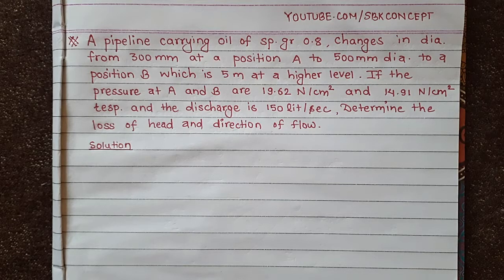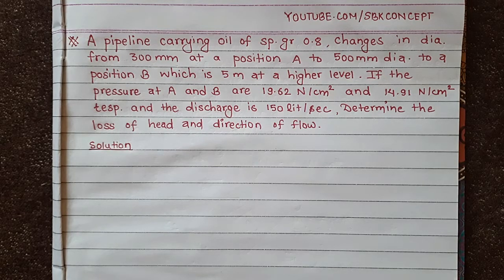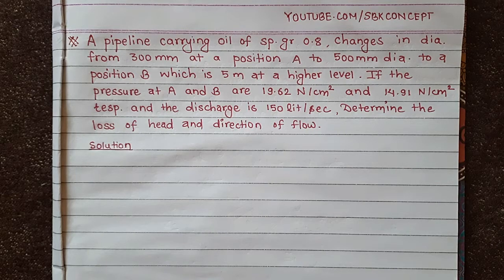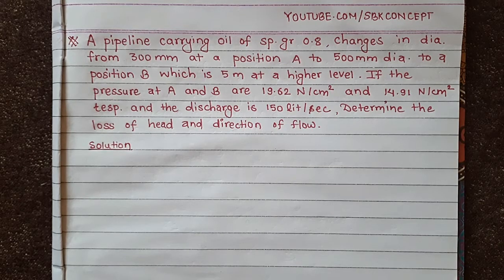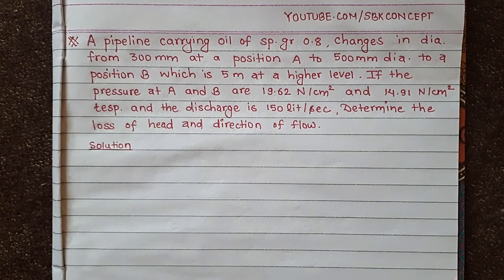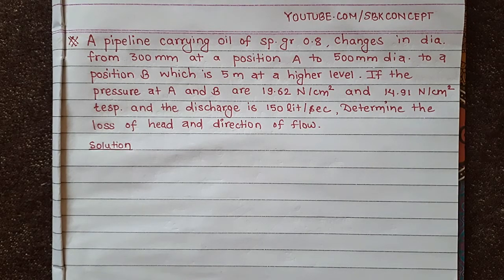The question is: a pipeline carrying oil of specific gravity 0.8 changes in diameter from 300 mm at position A to 500 mm diameter at position B, which is 5 meters at a higher level. The pressure at A and B are 19.62 newton per cm² and 14.91 newton per cm² respectively, and the discharge is 150 liters per second.